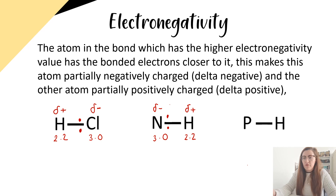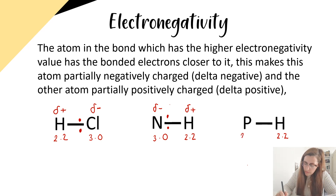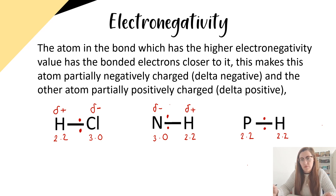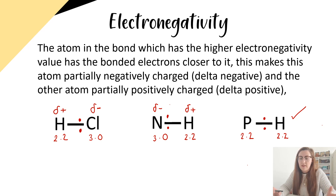Finally, if we look at phosphorus and hydrogen, hydrogen's electronegativity value is 2.2 and phosphorus's electronegativity value is also 2.2. Both atoms have an equal attraction for bonded electrons, so the bonded electrons in the covalent bond will not be pushed or pulled towards either atom — they will be sitting in the middle of the bond. So we don't give phosphorus or hydrogen a delta negative or delta positive sign.